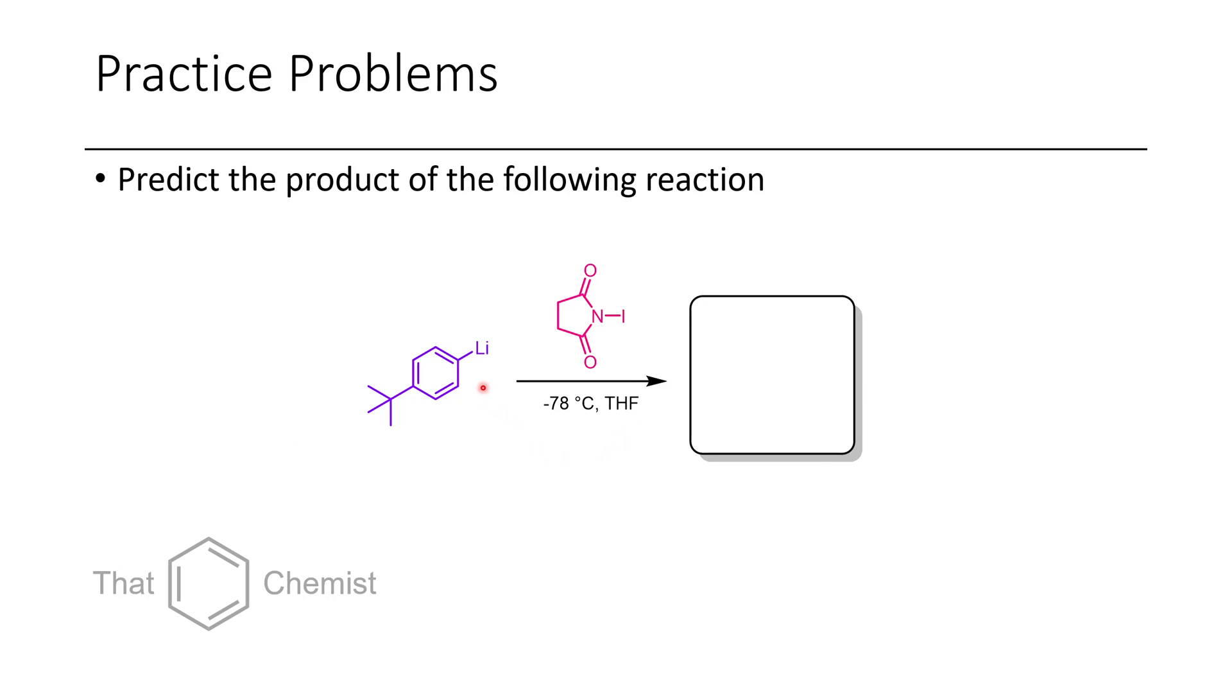In this next example, there's this aryl lithium, and it's treated with N-iodosuccinamide. And you might recall from earlier lectures that succinamide derivatives tend to be good electrophilic halogenating agents, such as N-chlorosuccinamide or N-bromosuccinamide. In this case, we have N-iodosuccinamide. So this ends up forming the aryl iodide product. So this just attacks at the iodide, which is partially positive, forming lithium succinamide as a byproduct.